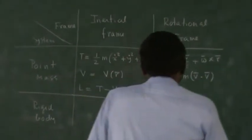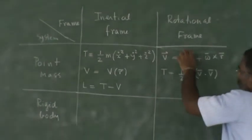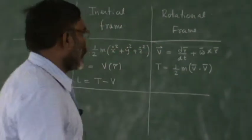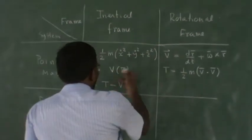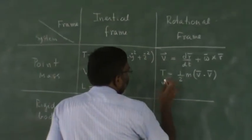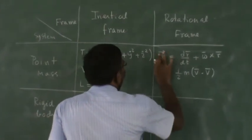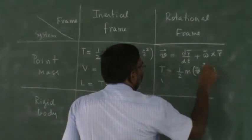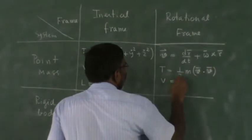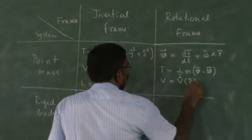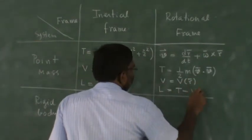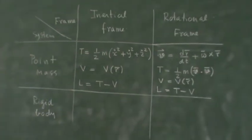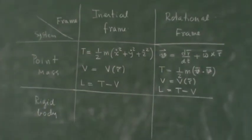So this is the velocity of the particle in the rotational frame. This is the effect of the rotation on the velocity. Then potential is same. I am sorry, I think I must write this as small v or something. Small v, small v. And this capital V is V of r. And then write like that as T minus V. You are going to do the same thing afterwards. So only in computing the kinetic energy, there is a difference.